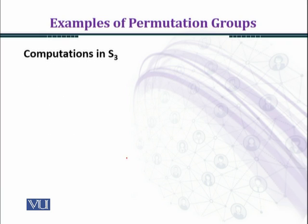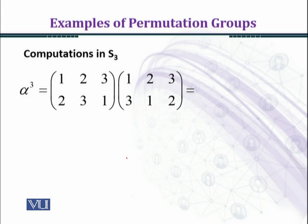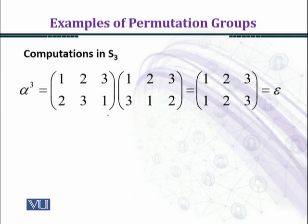Now we shall compute some expressions in S3. For alpha cubed: we multiply alpha squared with alpha. With 1→2→3, 2→3→1, 3→1→2, composing gives 1→1, 2→2, 3→3, which is the identity permutation. So alpha cubed equals epsilon.